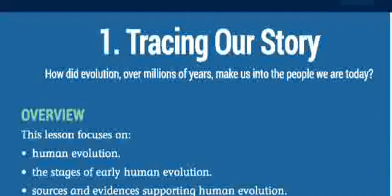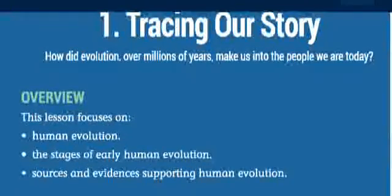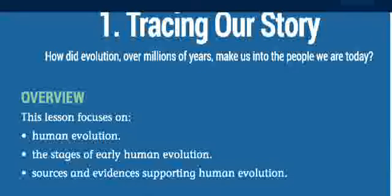The first chapter for you is Tracing Our Story. Tracing Our Story means we have to know the past ages and how the people were leading their lives in those days. This lesson focuses on human evolution, the stage of early human evolution, and sources and evidence supporting human evolution. These are the major things we are going to see in this lesson.